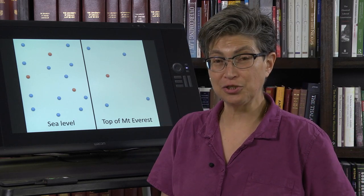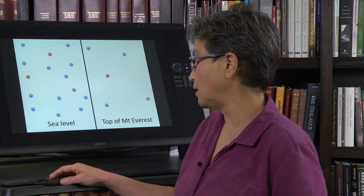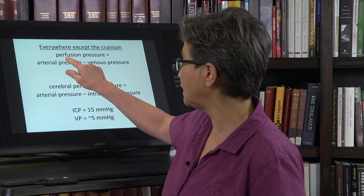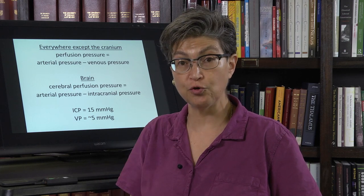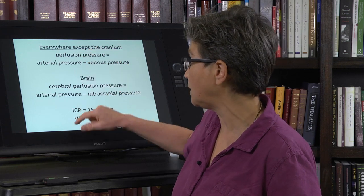How do we get the oxygen? We get the oxygen from blood. The oxygen comes in. We get it from blood, and the amount of blood that we get is dependent on the perfusion pressure, which is arterial pressure minus venous pressure in the rest of the body.